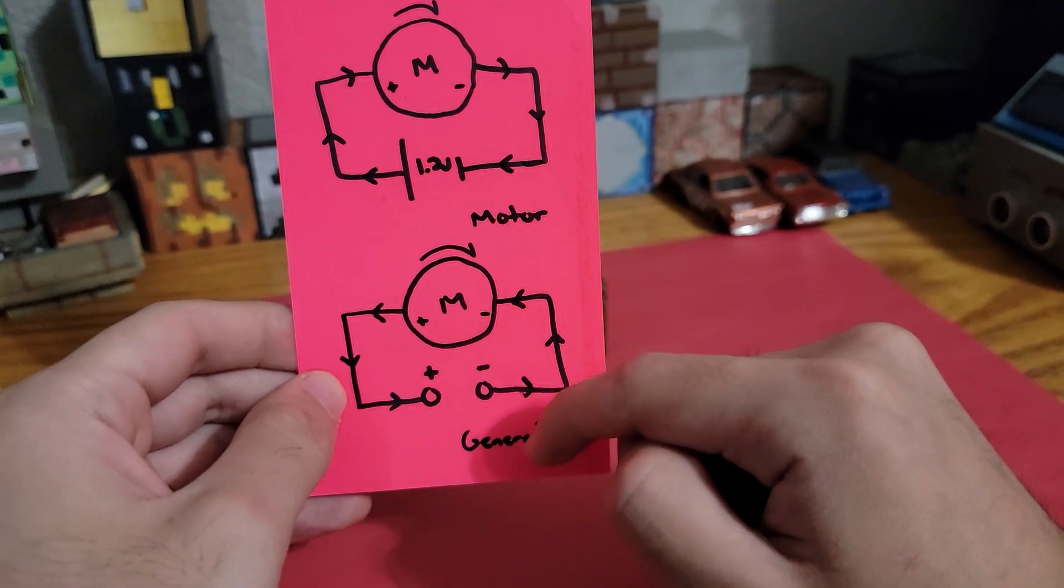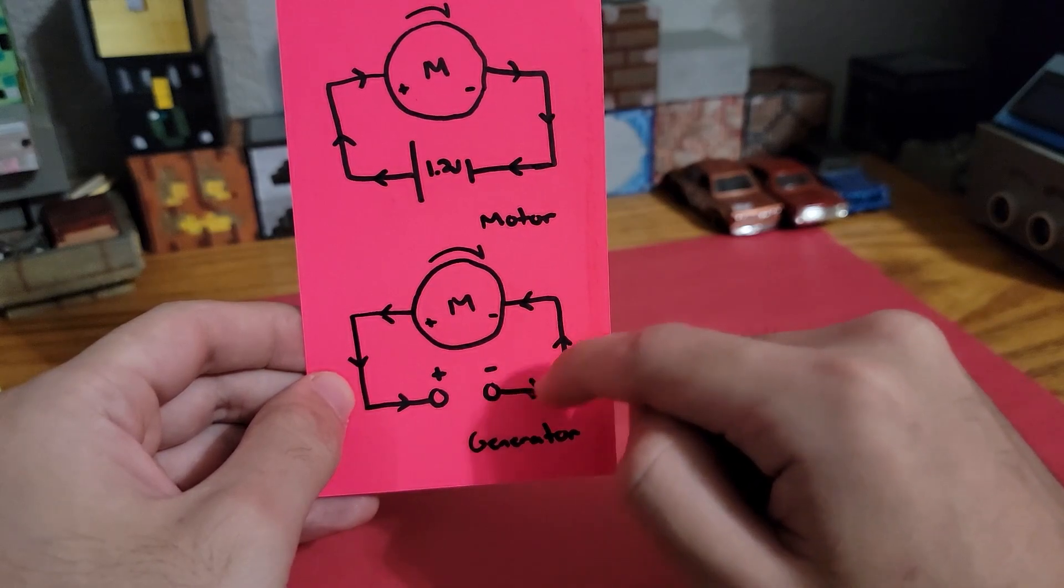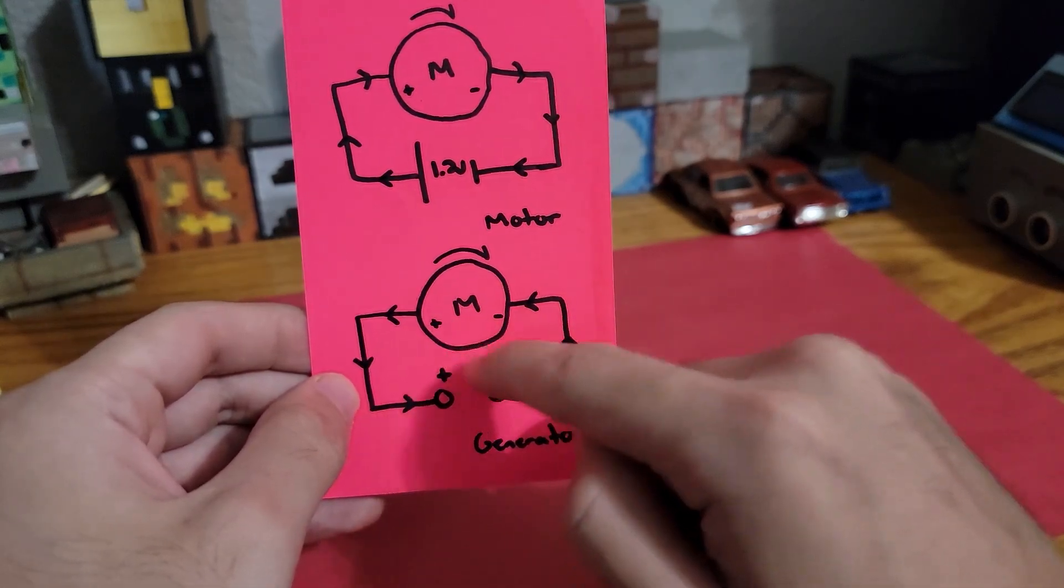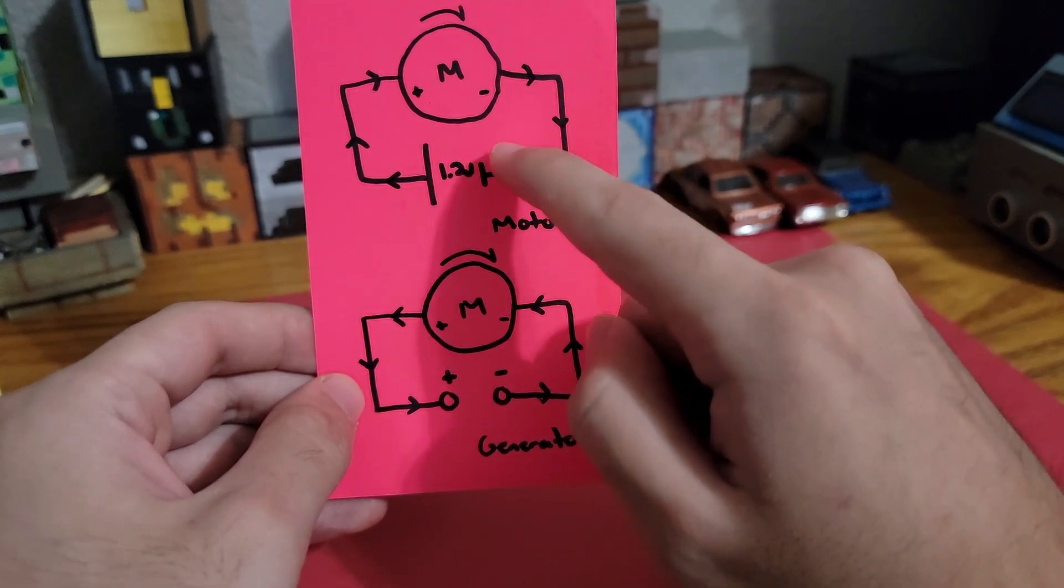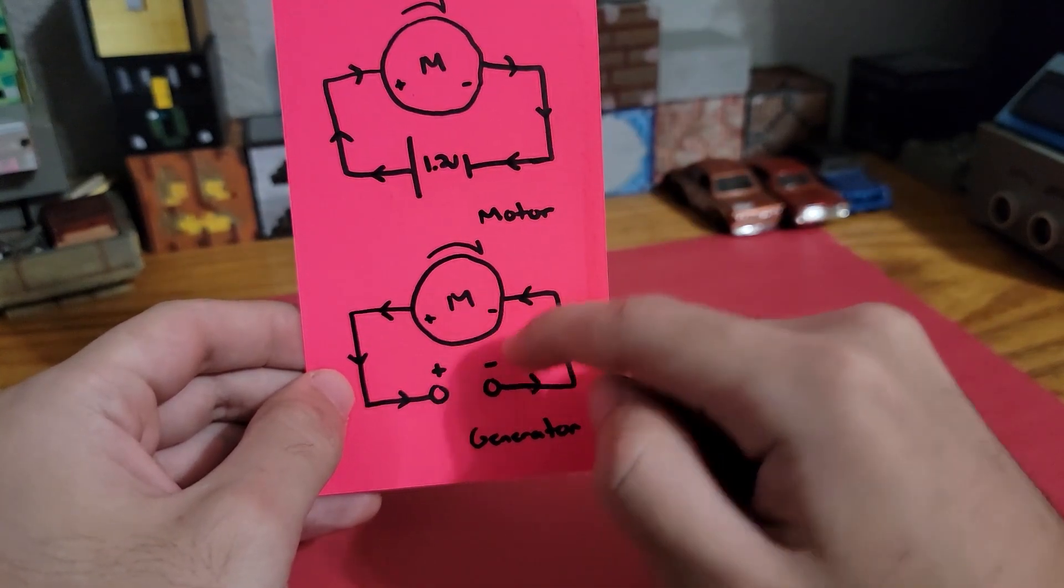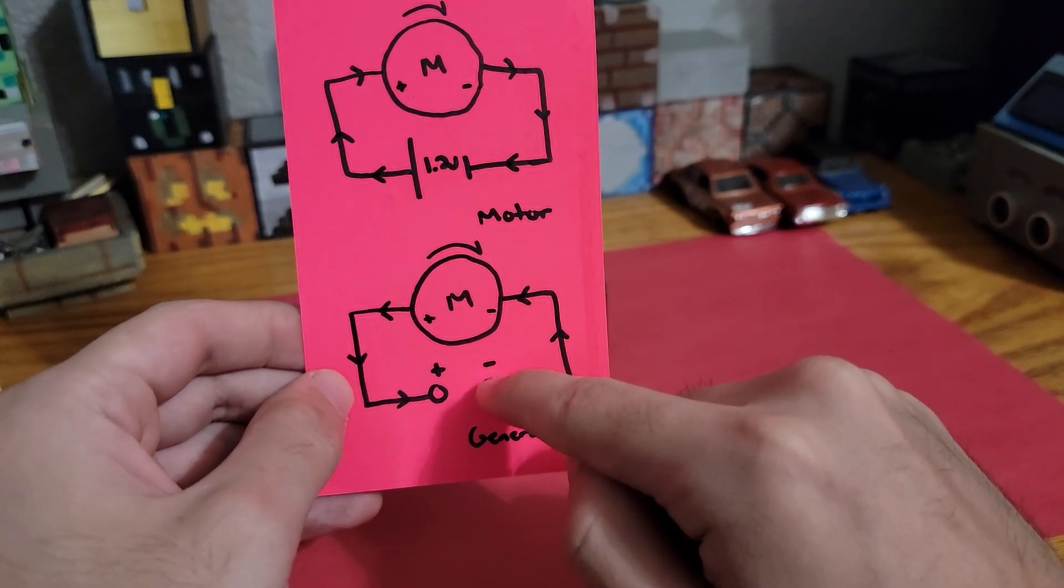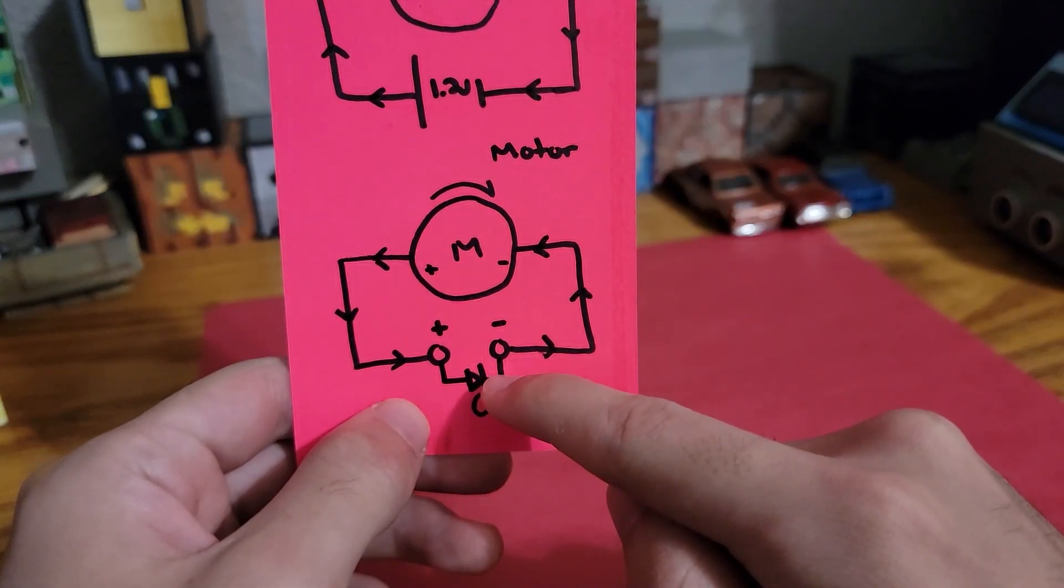When using the motor as a generator, we're actually spinning the motor manually and this will induce a current that is opposite from when we were supplying current. The motor can now be visualized more as a power source. Here you have your positive and here you have your negative.